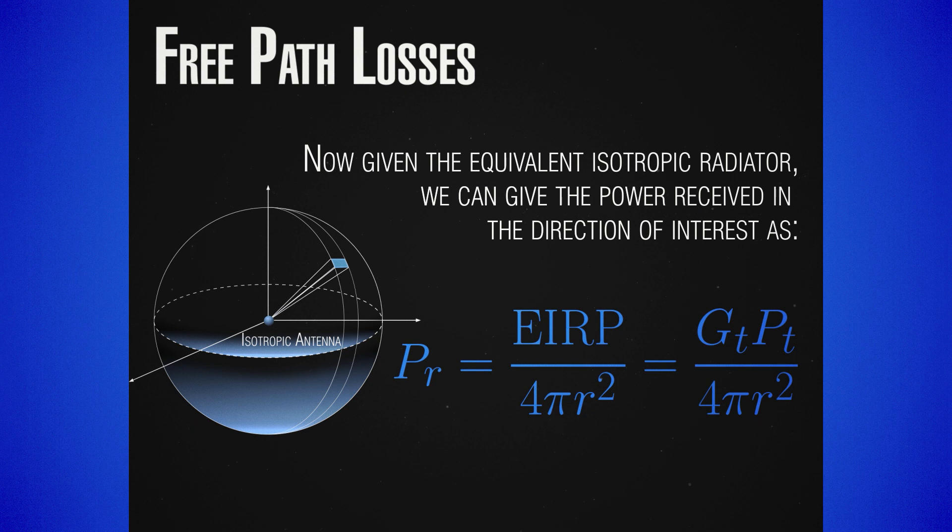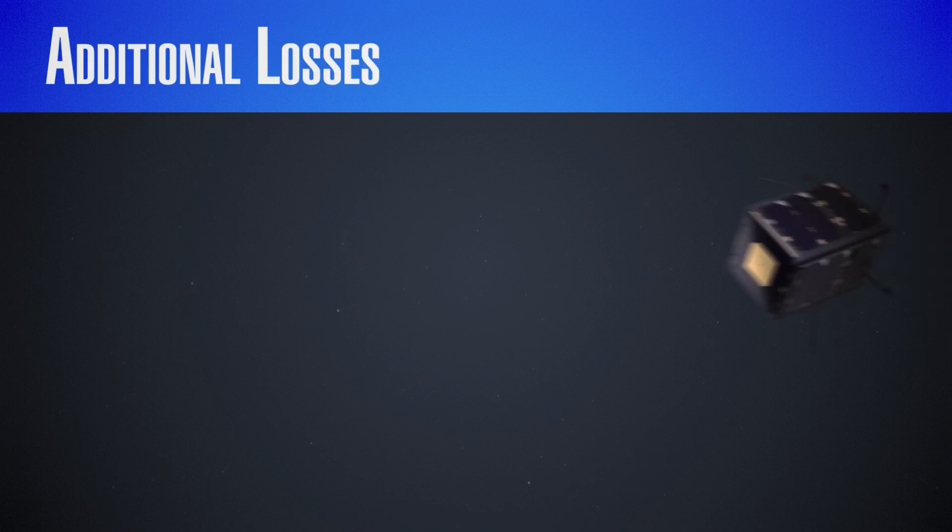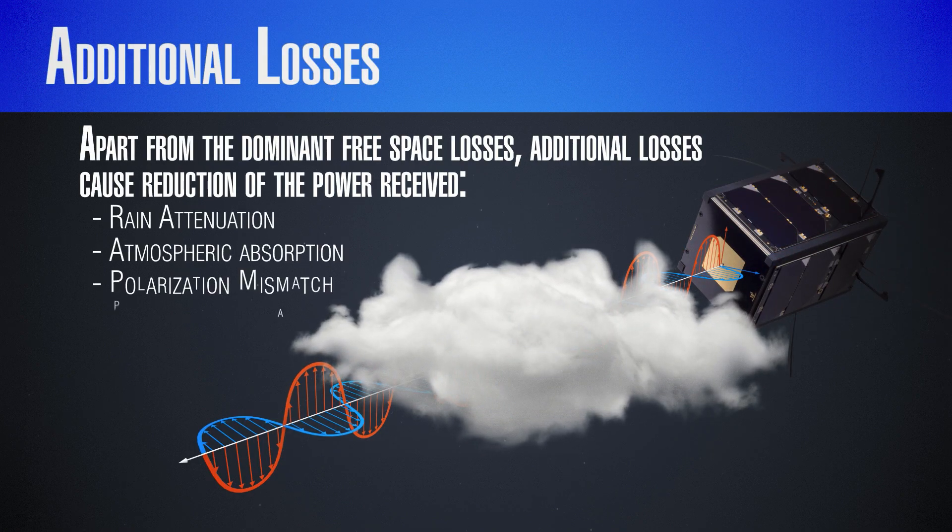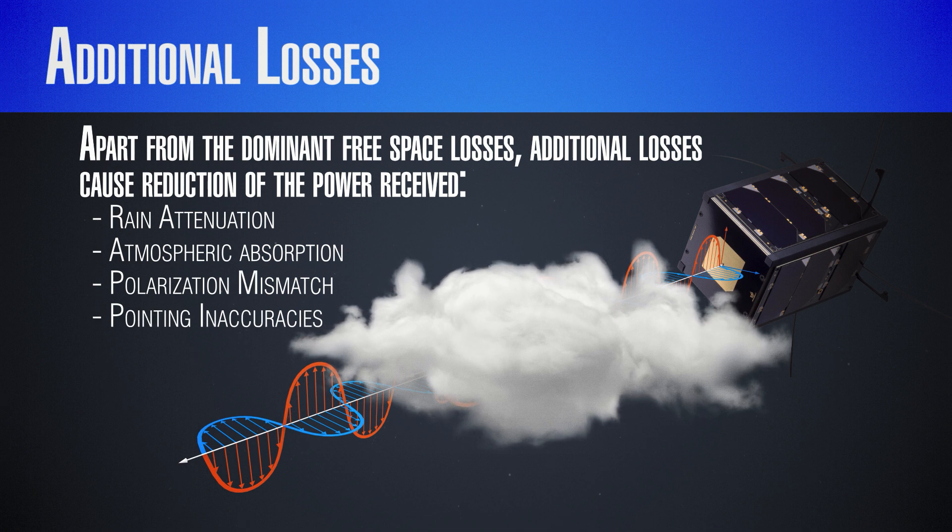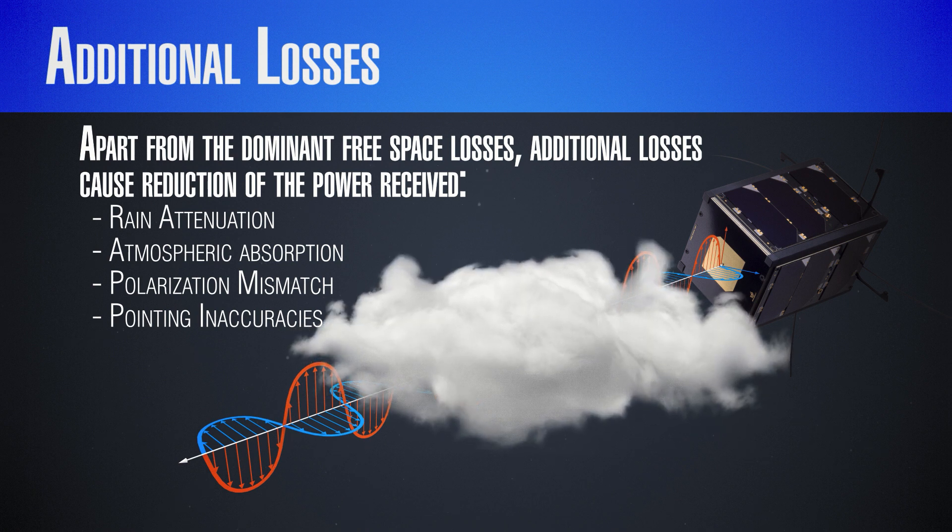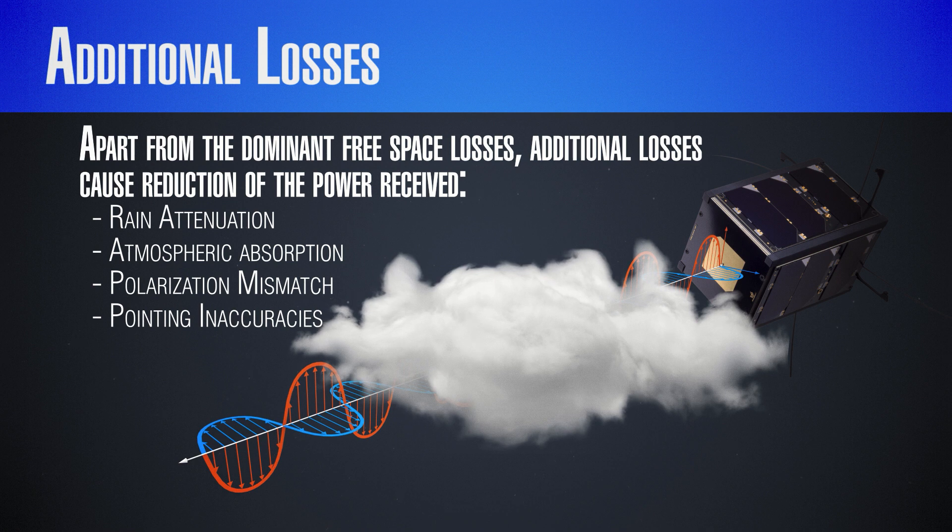Of course, the free space losses are not the only ones we should consider. Especially for higher frequencies, weather conditions can cause serious losses of signal power and so they are essential. In addition to that, polarization mismatch and pointing deviations can cause some reduction in signal power and so they should be included as well for a realistic link.